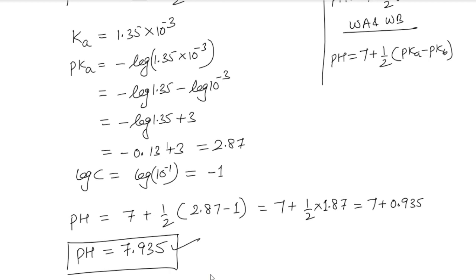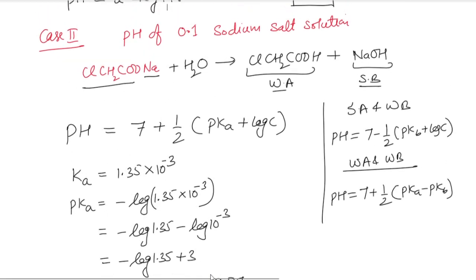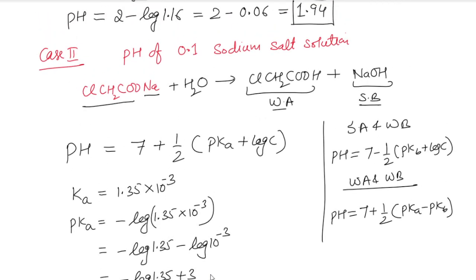So the pH of 0.1 molar sodium salt of chloroacetic acid is 7.935, and the pH of 0.1 molar chloroacetic acid is 1.94. That's all for question number 64 of ionic equilibrium. Thank you so much for watching — do like, subscribe, and share. God bless you all. Happy learning. Jai Hind, Jai Bharat.